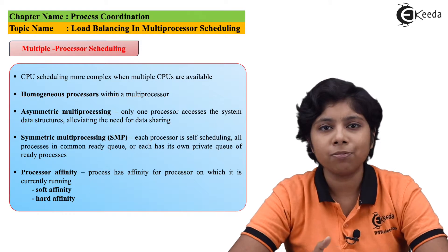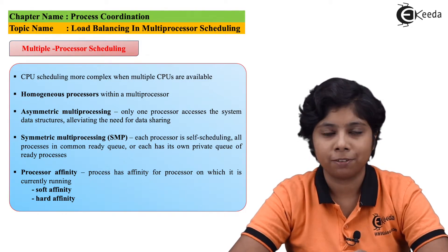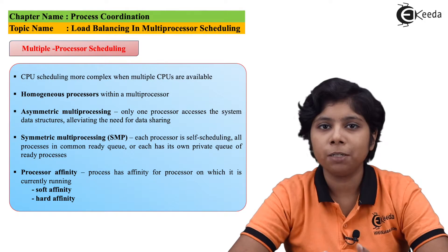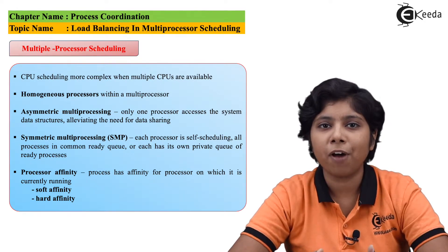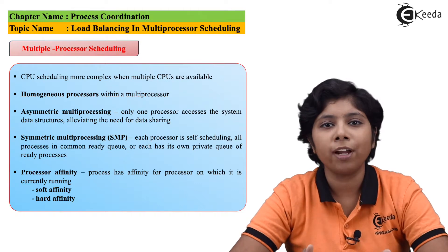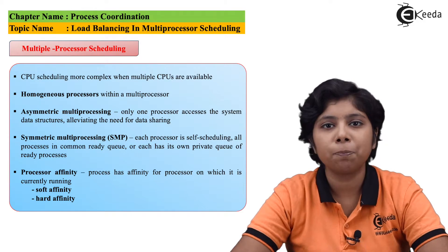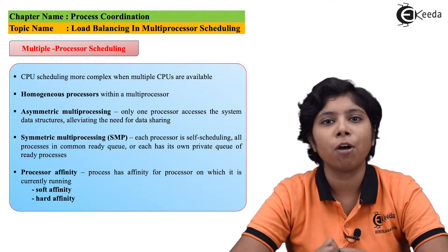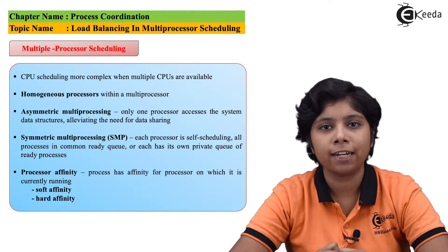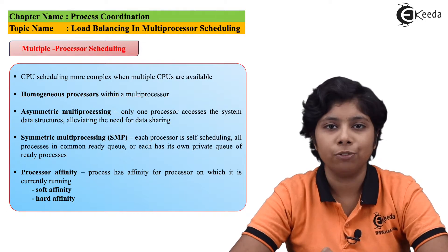By this way, push migration distributes the workload among the processors. In contrast, in pull migration, if a processor finds that it is idle and there is a non-idle processor with more processes in the ready queue, it can pull processes from there and execute them.